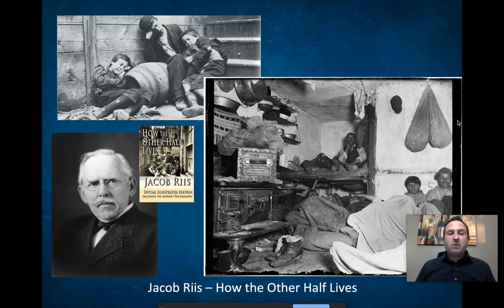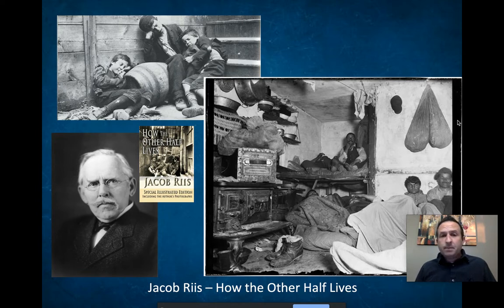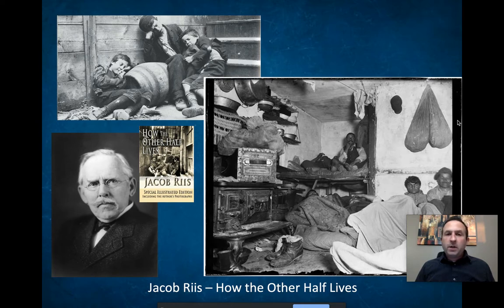There are a number of muckrakers. Ida Tarbell is a famous one who will go on to debate John D. Rockefeller and basically tell him he treats his people like crap. But one of the more famous ones was a man by the name of Jacob Riis. Jacob Riis was important because he brought a visual, visceral account of the slum areas of New York.